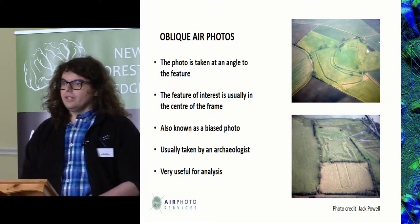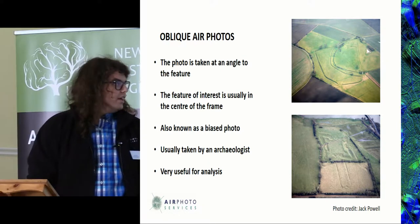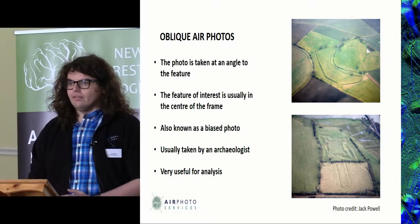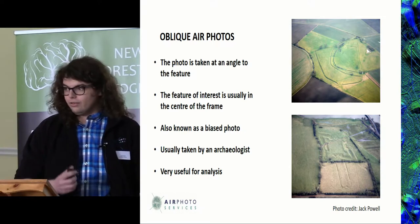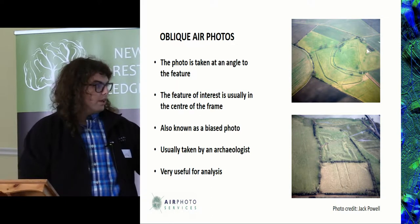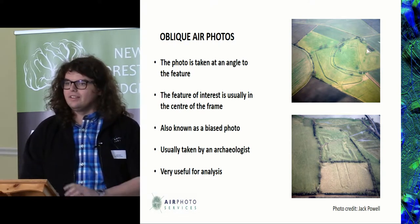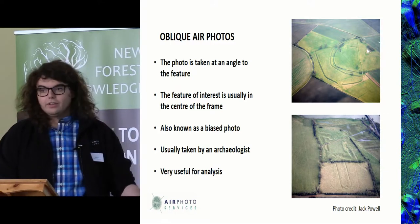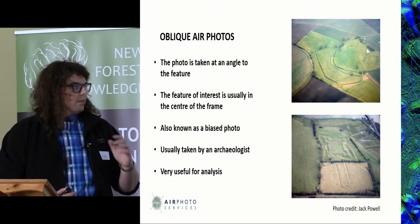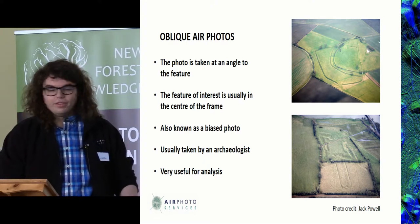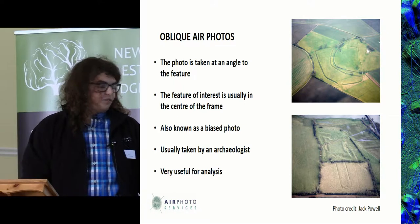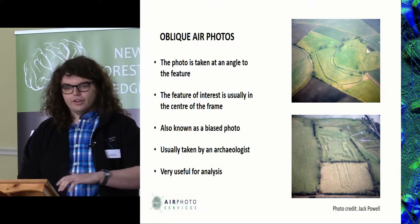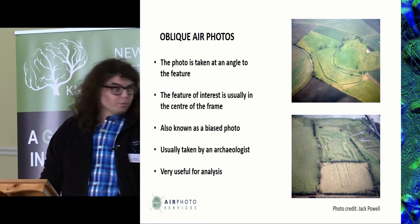The first type of air photos we use regularly for archaeological inspection is oblique air photos — though there are a lot of exceptions to what I'm going to say. Oblique air photos are usually taken from an angle to the target, out of the window of a light aircraft with a DSLR, with the archaeological feature usually in the center of the frame. They are known as biased photos, as the interpreter has actively chosen to photograph the archaeological site, making them extremely useful for analysis as they are more likely to contain archaeological features.